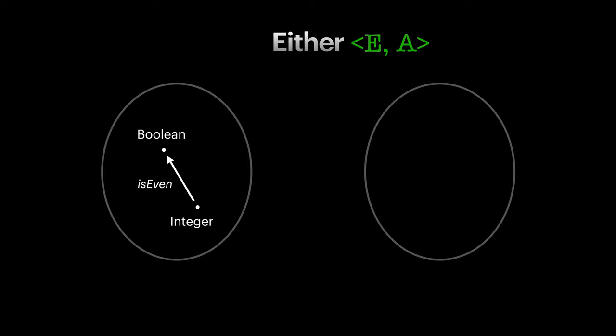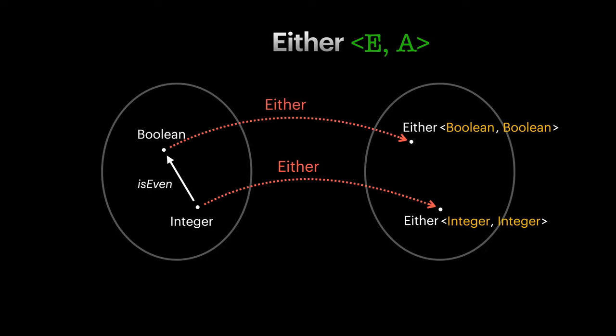How can we map objects using either? Well, we can map to an either of the same type for left and right. But that doesn't seem like a useful construct. What else can we do? We can also partially fix one of the type parameters.